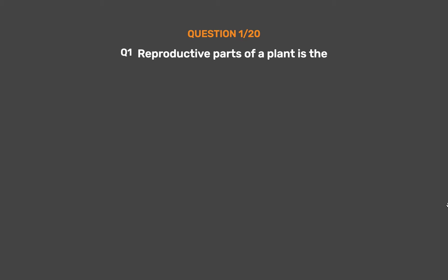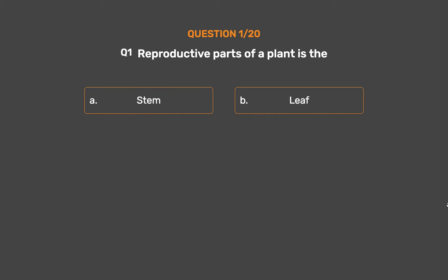Question No. 1. The reproductive part of a plant is: Option A – Stem. Option B – Leaf. Option C – Flower. Option D – Root.